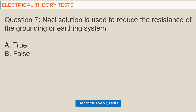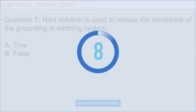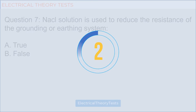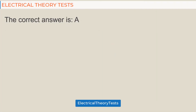Question 7: An ACL solution is used to reduce the resistance of the grounding or earthing system — a) true, b) false. The correct answer is a) true.